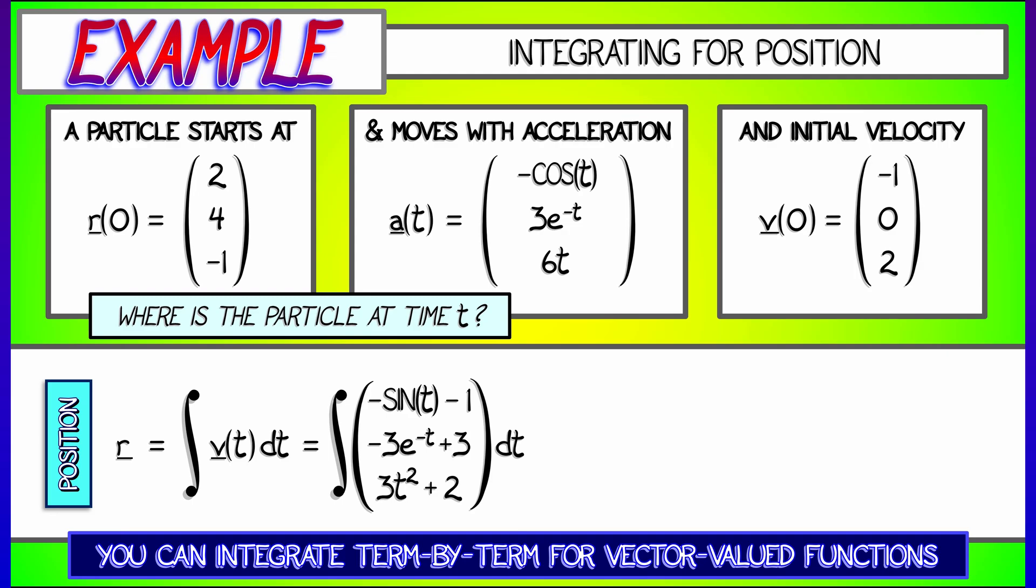The integral of minus sine t minus 1 is cosine t minus t. The integral of negative 3e to the minus t plus 3 is positive 3e to the minus t plus 3t. And the integral of 3t squared plus 2 is t cubed plus 2t. Ah, once again, forgot the constants. So, let's put those in: c1, c2, c3.